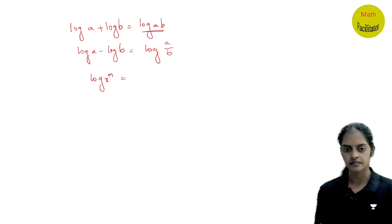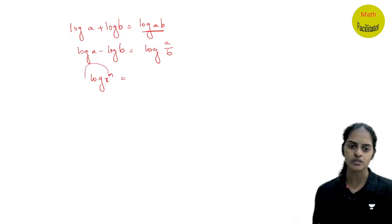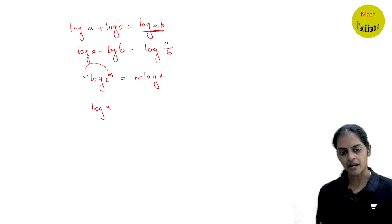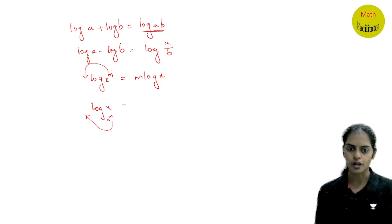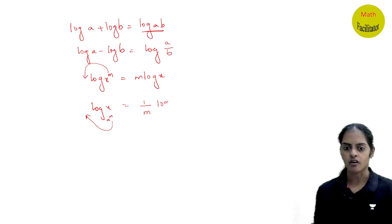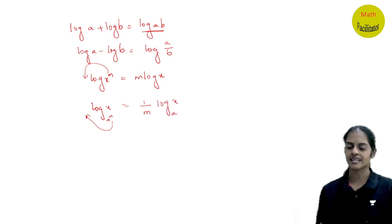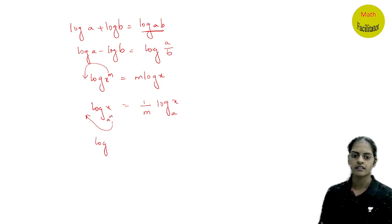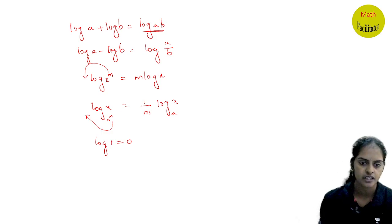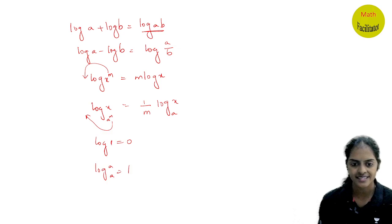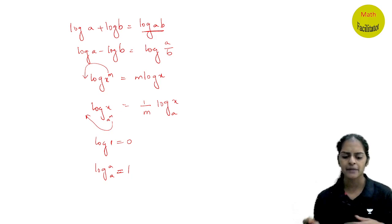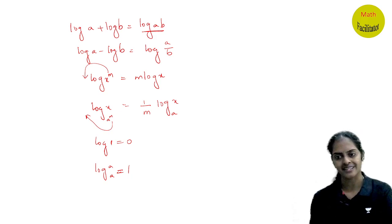Log x power m — this m goes and sits in front. So you get m log x. Suppose if the power is in the base — log x to the base a power m — then this m goes down, not up. So you get 1 by m times log x to the base a. And log 1 is 0. And log a to the base a — if the base and the log are the same, then it is 1. These are the basic formulae of logarithm which everyone has to know.